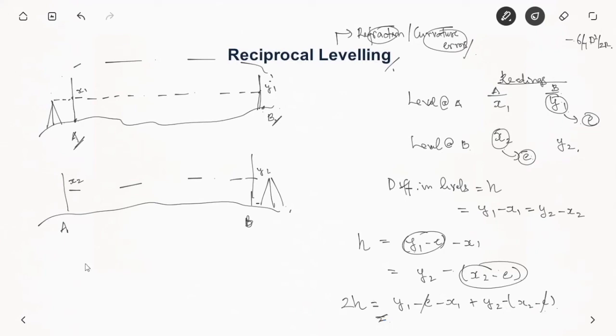In the end we have difference in level h equal to y1 minus x1 plus y2 minus x2 by 2. So in this way we can eliminate this error due to refraction or curvature.